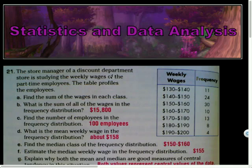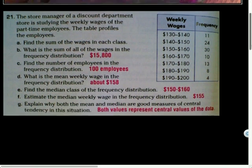So, going over this problem, we were just talking about mean, median, and mode - different measures of central tendency. If I want to find the mean in a frequency distribution, the issue we had was that I don't know these actual data values. I just know that there's 11 within this class and 24 within this class.